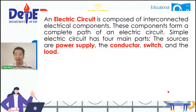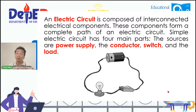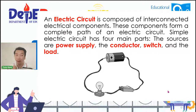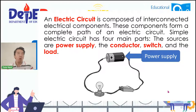Para lubos ninyong maintindihan, tignan ninyo ang larawang ito. Nandito ang mga bahagi kung paano tumatakbo ang isang electric circuit. Kapag kulang ang isa, maaaring hindi makatakbo ng maayos. Kunin ang inyong mga ballpen, lapis, at ang inyong papel, at isulat ang mga importanteng bagay na ito. First is the power supply — dito nagagaling ang enerhiya para mapailaw, mapatakbo, o gumana ang isang bagay. We need to have a power supply.